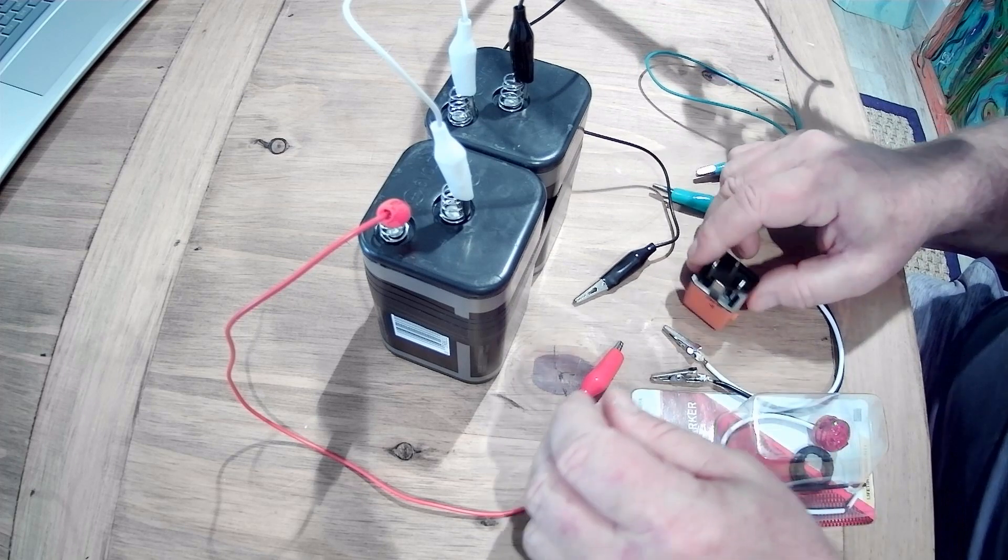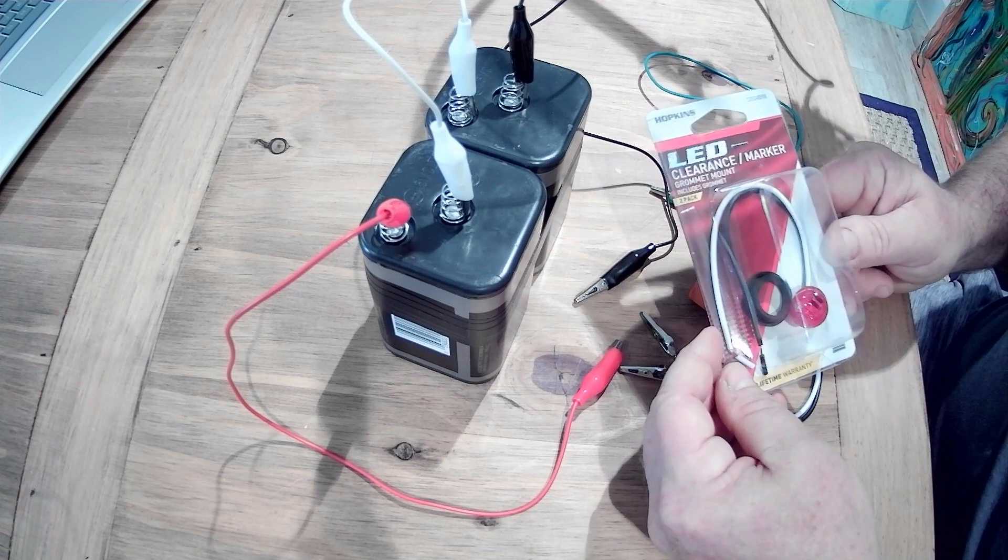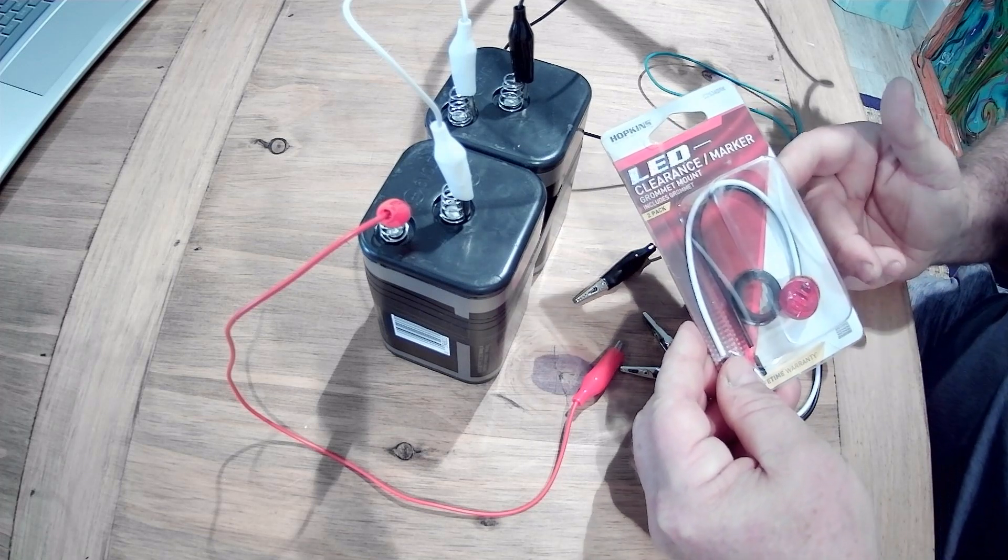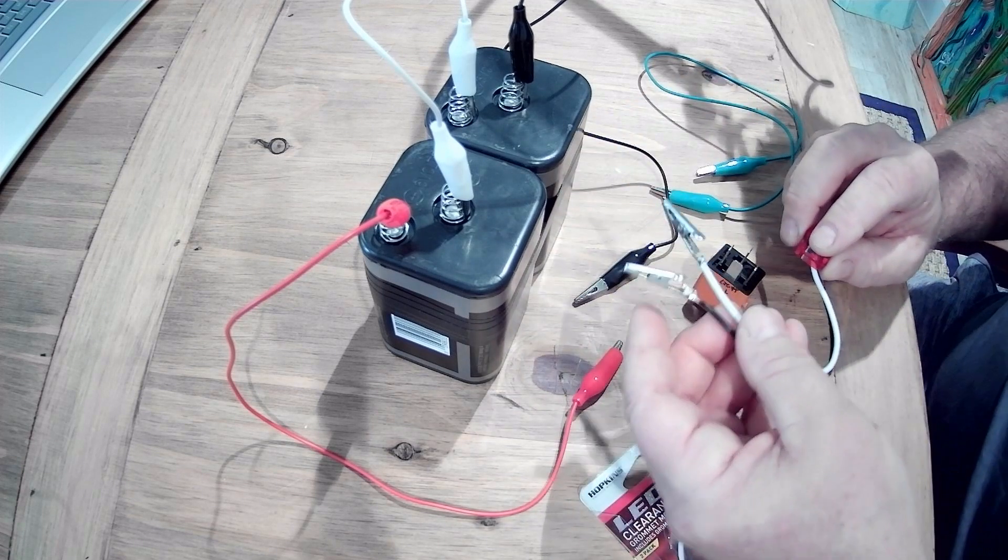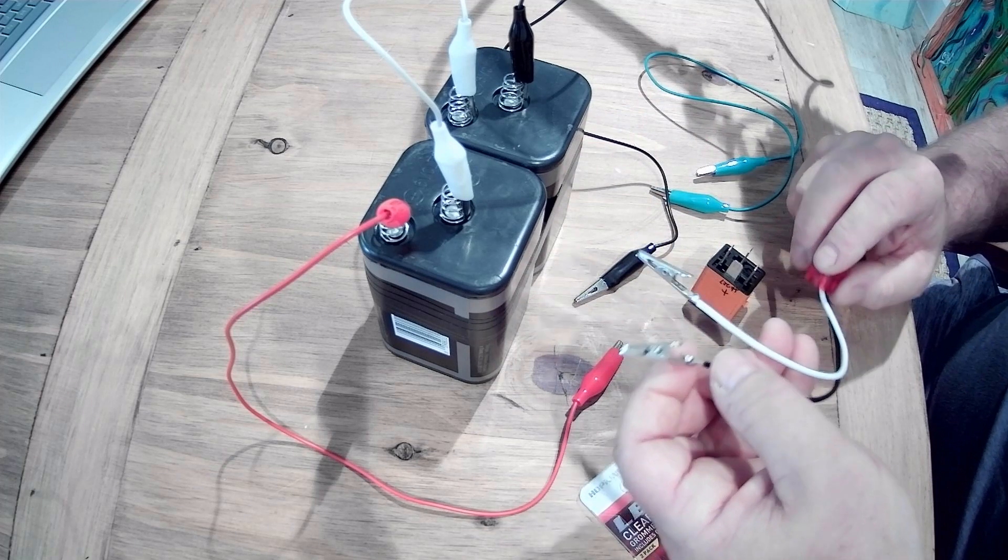And then you're going to need some kind of a test light. I use, I bought this at Lowe's. It's just a light that you would use on an RV. It's a clearance marker. I just happened to solder a couple of alligator clips to it because I use it for testing other stuff.